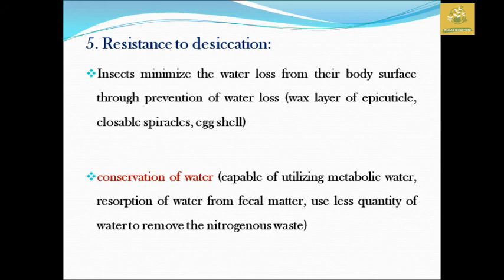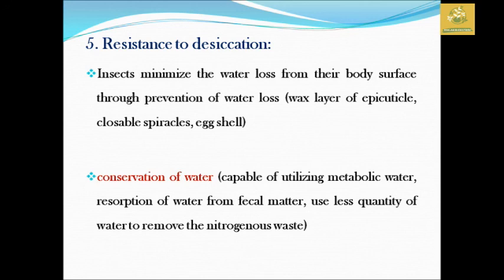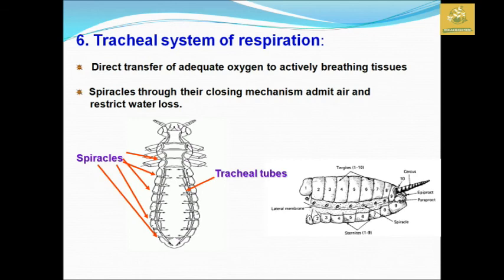After the presence of exoskeleton, we look at resistance to desiccation. Insects resist and minimize water loss from the body surface through prevention of water loss by having a waxy epicuticular layer, closable spiracles, and egg shells. They conserve water by using metabolic water, reabsorption of water from fecal matter, and using less water to remove nitrogenous waste from the body. The insect dying due to dehydration is said to be less when compared to other organisms.